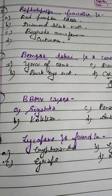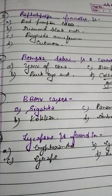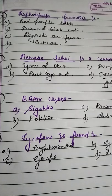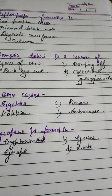Student, question number 7. Raphidopalpa foveicollis — you have to tell the common name. If you have made a chart in 3rd year while reading IPM, this will be very helpful. Raphidopalpa foveicollis is your red pumpkin beetle. Diamond black moth — remember Plutella xylostella. And cutworm is Agrotis species.